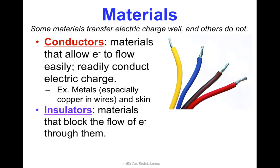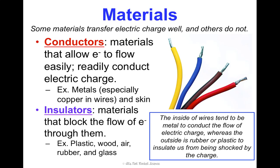Insulators are materials that block the flow of electrons through them — things like plastic, wood, air, rubber, and glass. What's interesting is the anatomy of a wire: you tend to have metal within the wire to conduct that electric charge and allow it to flow, and then surrounding the wire is rubber or plastic to protect and insulate people like us from getting shocked by the wire.